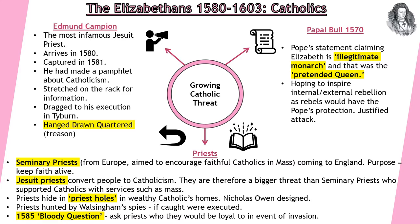Edmund Campion is an example we're going to look at here — probably the most infamous Jesuit priest. He arrives in 1580 and is captured in 1581. He made a pamphlet about Catholicism and was trying to encourage people to turn away from their Protestant beliefs. He's actually tortured quite extremely — stretched on the rack for information. He ends up being dragged to his execution at Tyburn, where he's hanged, drawn and quartered for treason.